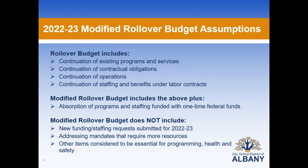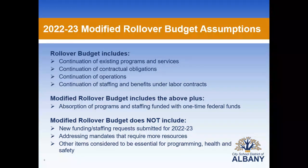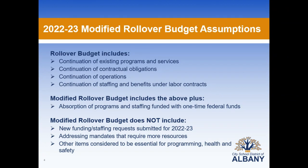As a review, this year we have what we are referring to as a modified rollover budget. The assumptions of a rollover budget include continuation of existing programs and services, contractual obligations, operations, and staffing and benefits under our labor contracts. A modified rollover budget includes the above plus absorption of programs and staffing funded by one-time federal funds. It does not include any new funding or staffing requests submitted for 22-23, addressing mandates that require more resources or other items considered essential for programming, health, and safety.